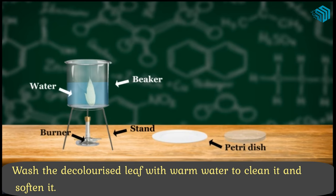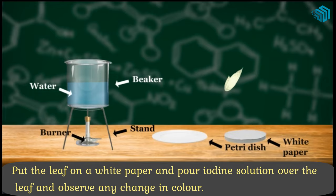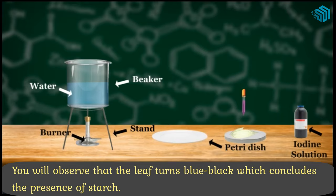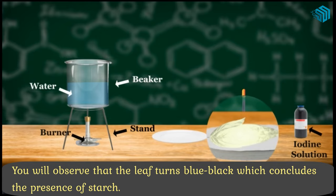Put the leaf on white paper and pour iodine solution over the leaf to observe any change in color. You will observe that the leaf turns blue-black, which concludes the presence of starch.